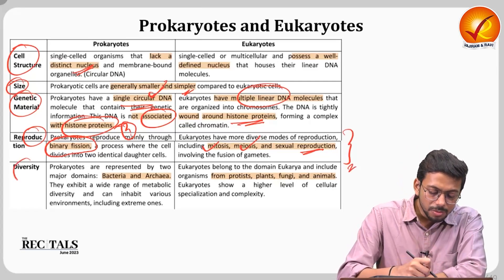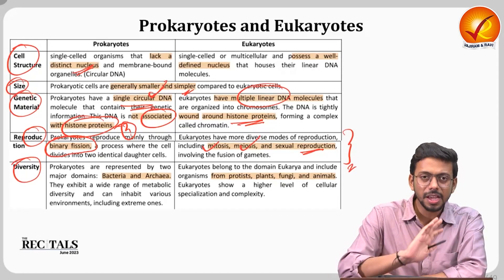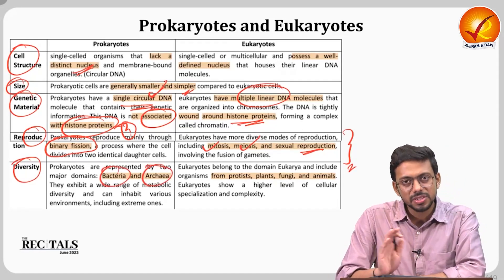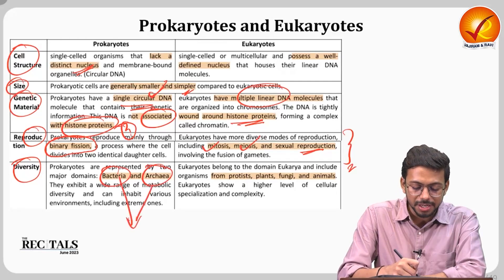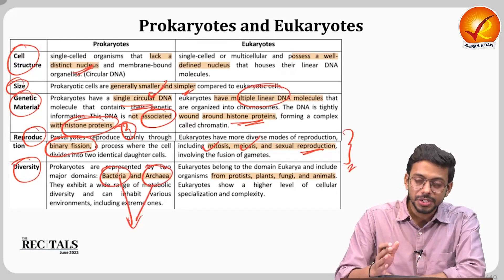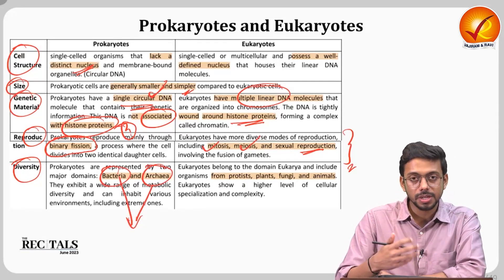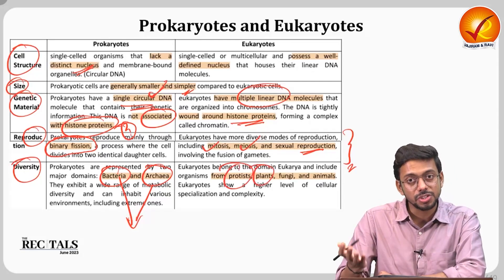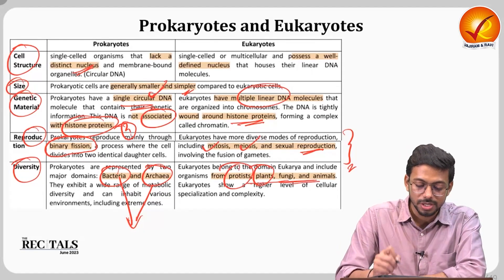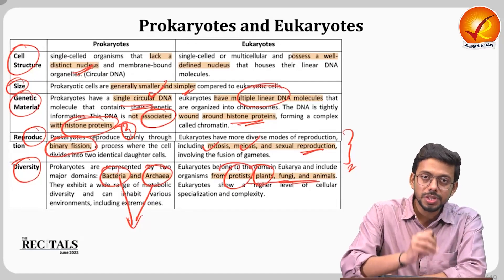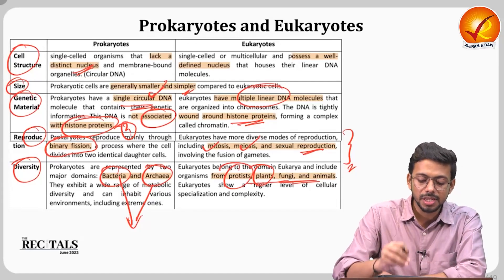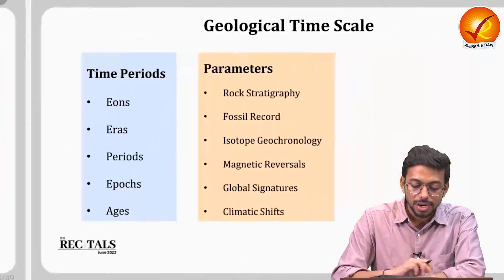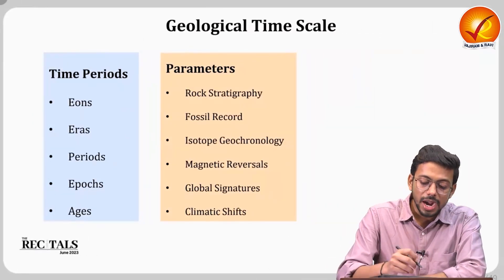In terms of diversity, prokaryotes are mainly of two types — bacteria and archaea — which have slight differences, which is why they've been demarcated. Eukaryotes, however, are far more diverse: protists, plants, animals, and fungi all come under eukaryotes. They include both unicellular and multicellular organisms.